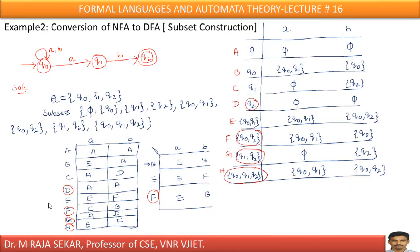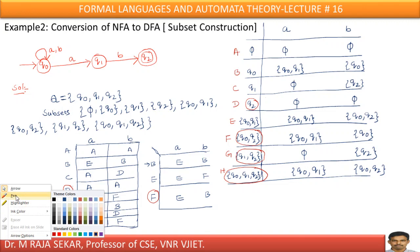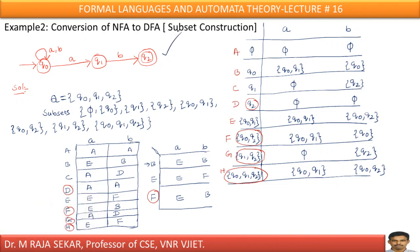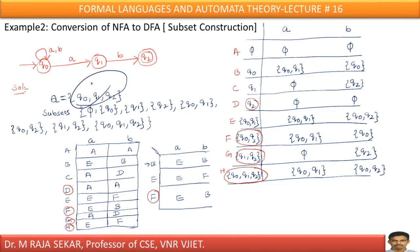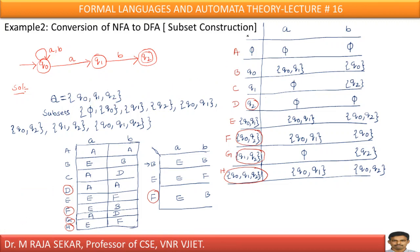Now let me discuss another procedure for the same problem — this is known as the subset construction method. How many states are there? There are three states: Q0, Q1, Q2. If there are three states, how many possible subsets are there? Eight. If there are N elements, the number of possible subsets is 2^N. As there are three states, 2^3 = 8 subsets. Just form the subsets — that is the power set, meaning the set of all subsets: the empty set, single-element sets, two-element sets, and the three-element set.